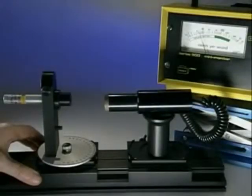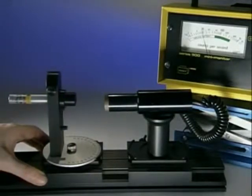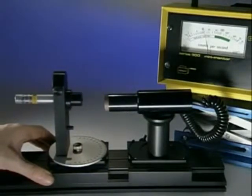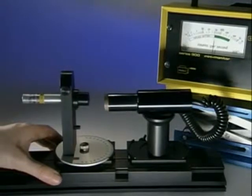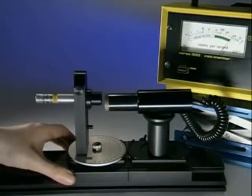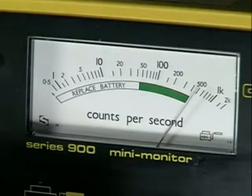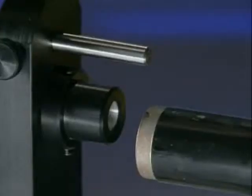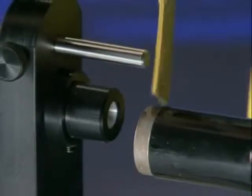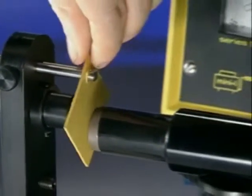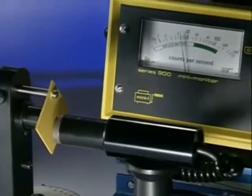So how does alpha radiation behave? This is an alpha source. At this distance, the count rate is about 500 per second. Place a thick sheet of paper in its path and all the alpha radiation is absorbed.